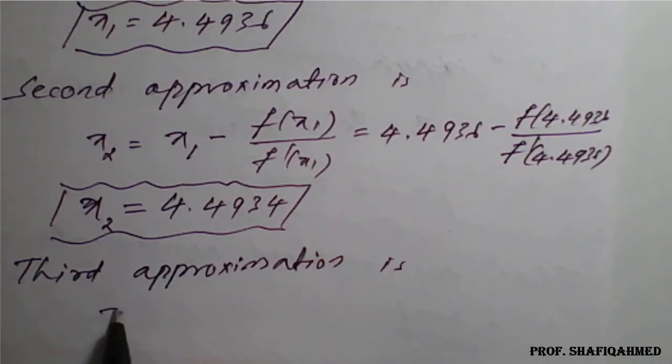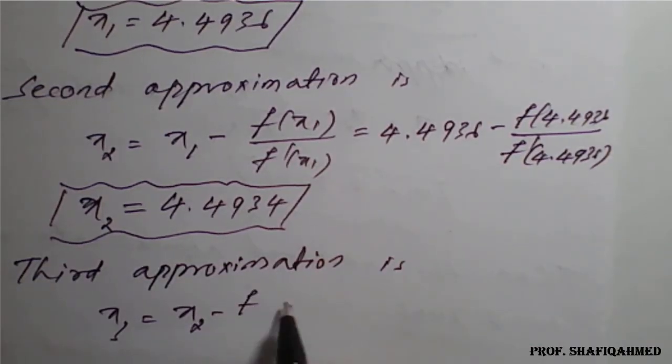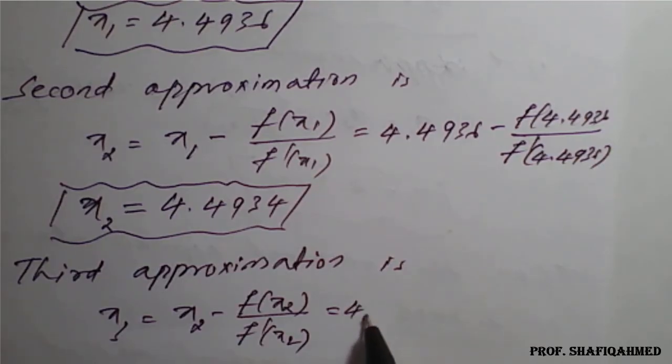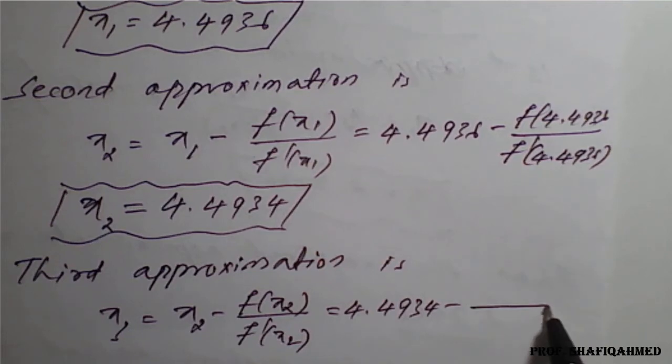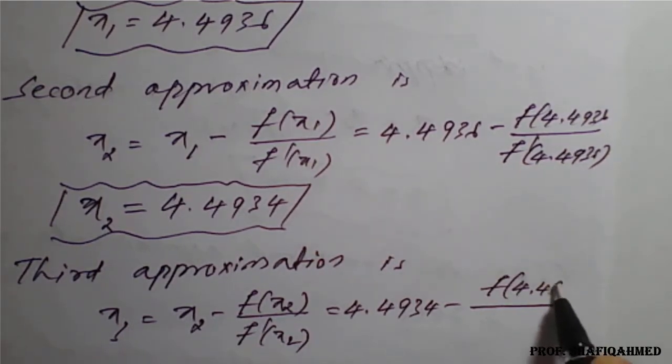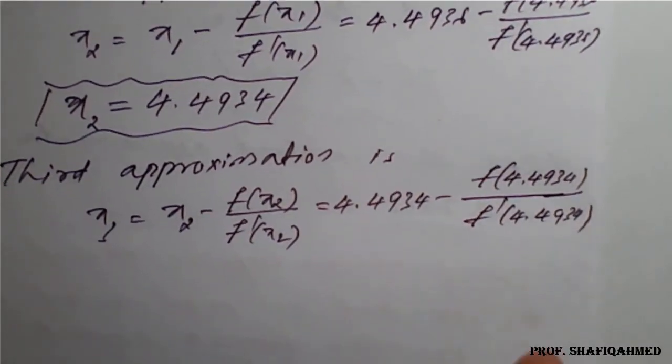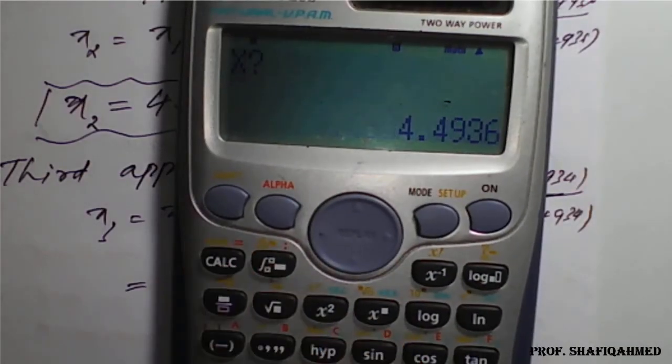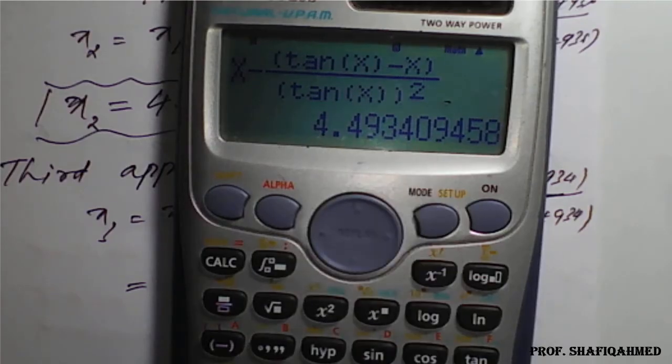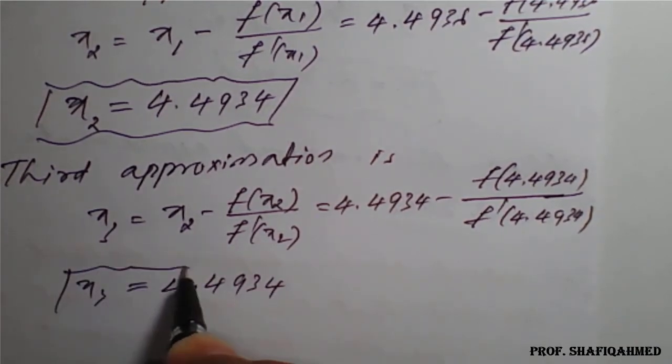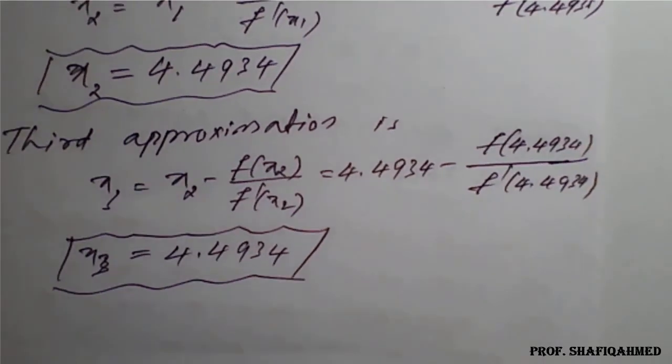Third approximation is x3 equals x2 minus f of x2 divided by f dash of x2, which is 4.4934 minus f of 4.4934 divided by f dash of 4.4934. Applying the value of x as 4.4934 in the formula, we get x3 as 4.4934 again. You can see here we are getting 4.4934. Now the second approximation and third approximation are exactly the same.